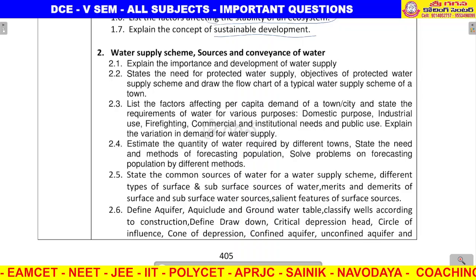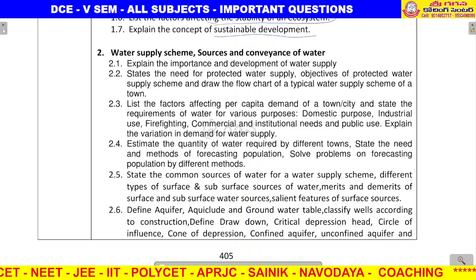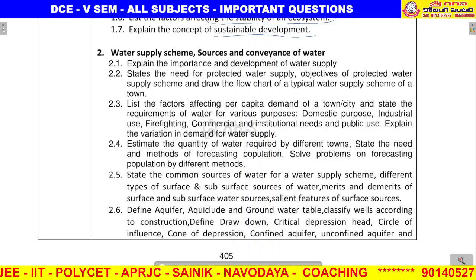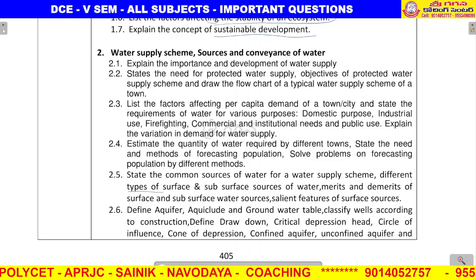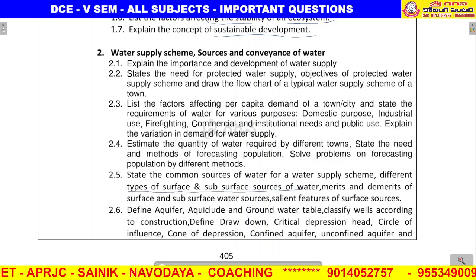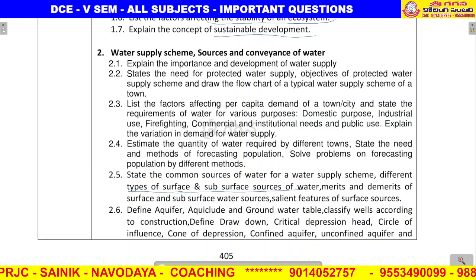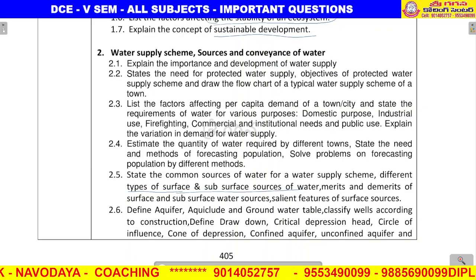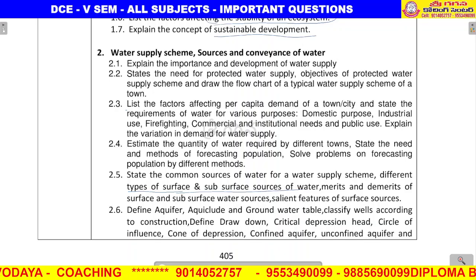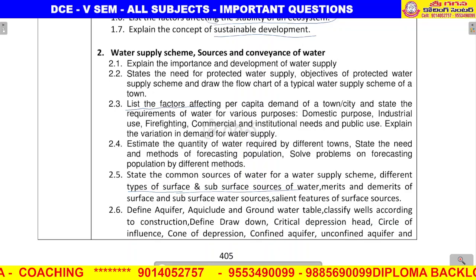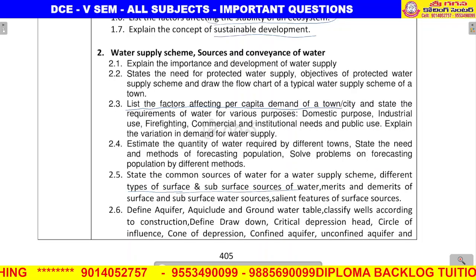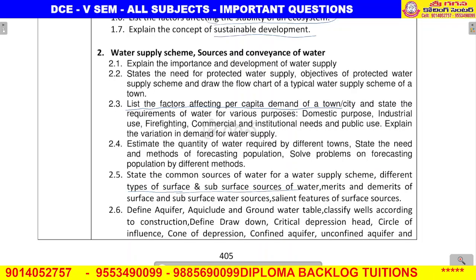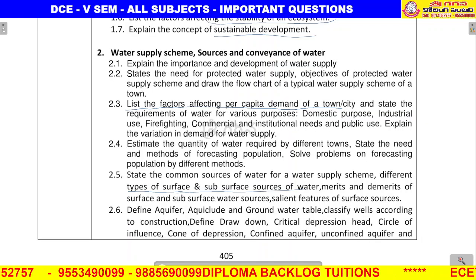Water supply scheme: sources and conveyance of water. Important question: what are the different types of subsurface and surface sources of water? Next, very very important question: what is meant by per capita demand, and what are the factors affecting per capita demand?